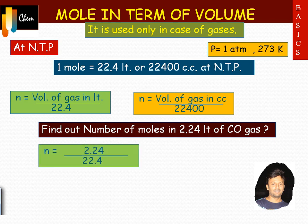For example, if the question is to find out the number of moles in 2.24 litres of carbon monoxide gas, we will use the formula in litres. Hence, number of moles equals 2.24 divided by 22.4.